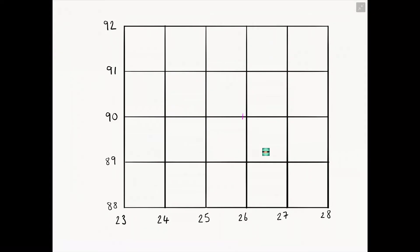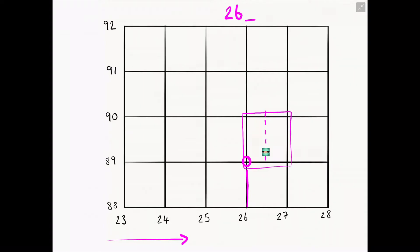Let's have another go. We move the bitmoji, locate the grid square, find our best friend, go along the corridor to find the line linking to our best friend — first two numbers are 26. We halve the grid square and estimate where the bitmoji is; I've estimated it's in the middle, giving a five. Going up the stairs the line is 89. We split the grid square in half again and estimate the steps — the answer for this one is 265892.